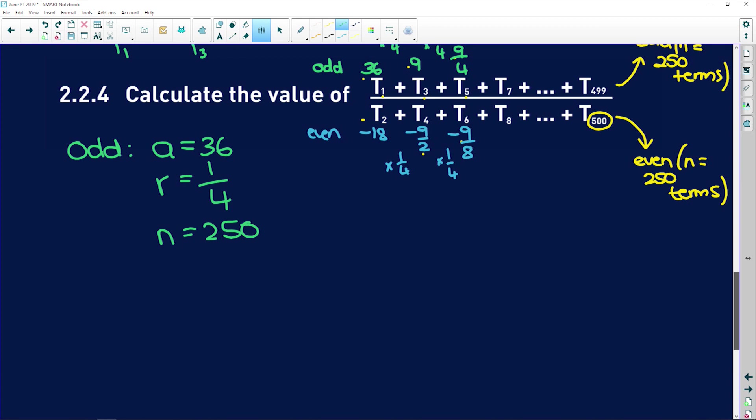So the sum of the odd terms, remember, there are 250 of them. Remember, Sn is given to us as a into r to the power of n minus 1, all over r minus 1. So S of 250 for the odd valued terms is equal to a, which is 36, multiplied by r, which is a quarter, to the power of n, which is 250, so let me put this in its own bracket, minus 1.